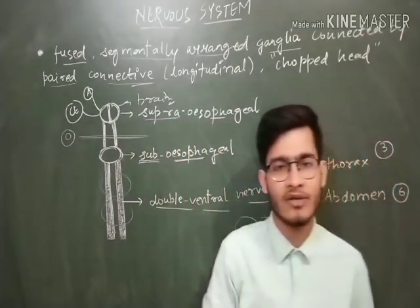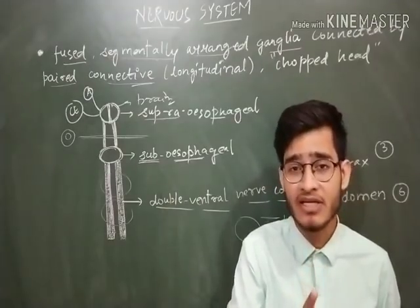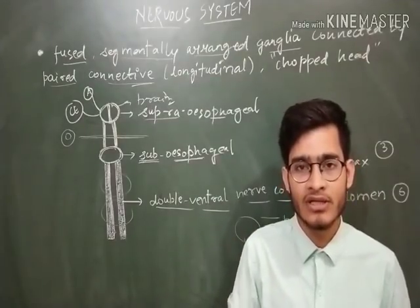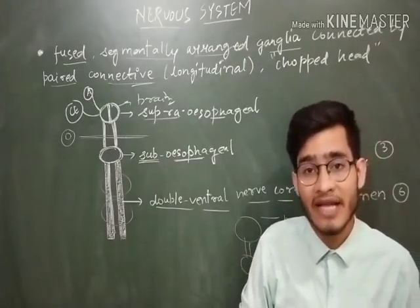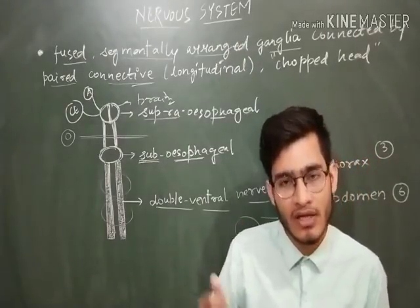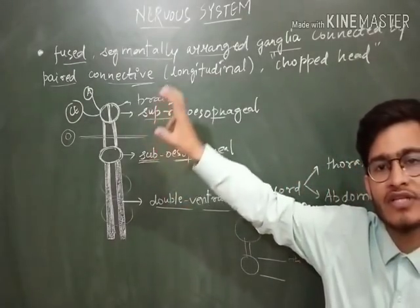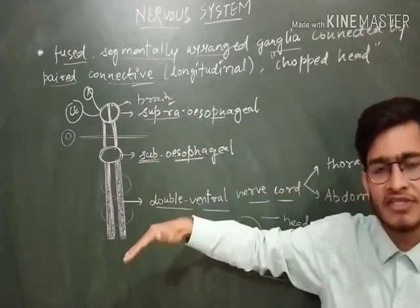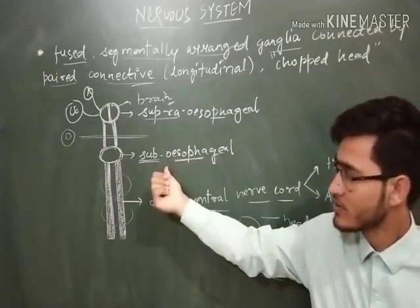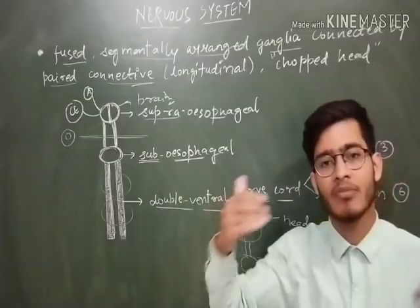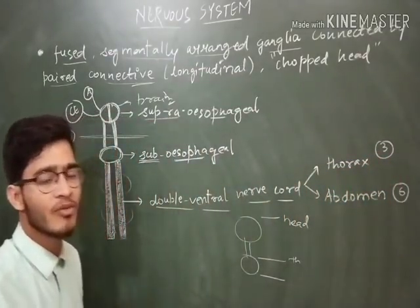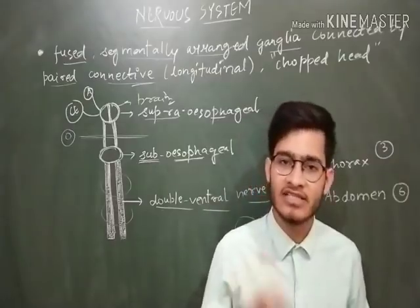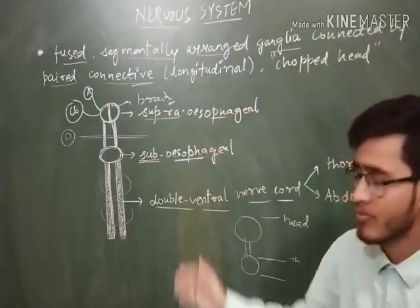So let me elaborate all the things to you once more. Basically, what happens is that ganglions in the body are present, that's why they are segmentally arranged. They are connected to each other, that's why they are fused. And they are connected with the help of longitudinal connectives. Because they are connecting the two ganglions. Now, supra-esophageal ganglion will be representing the brain which will send the nerves to the antenna and the compound eyes. And below esophageus level, there will be sub-esophageal. Sub means below. So under that, you will have double ventral nerve cord, and there will be connectives which will be joining different kinds of ganglions which are present in thorax and abdomen which are three and six respectively. So in this way, you will have the whole nervous system.